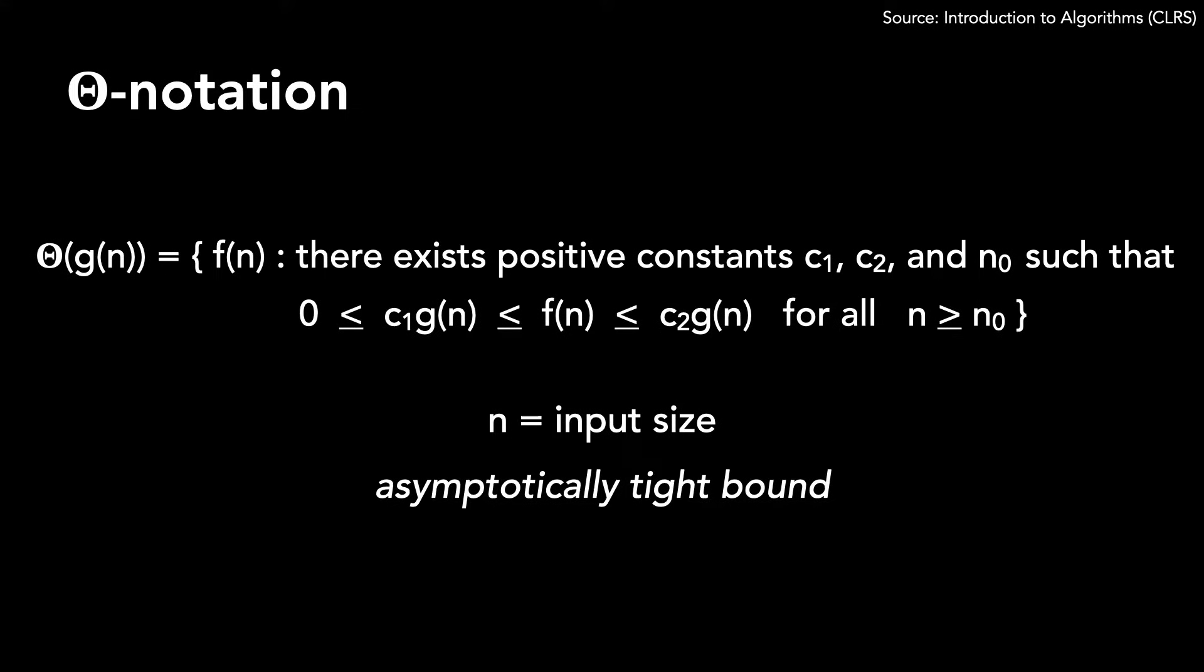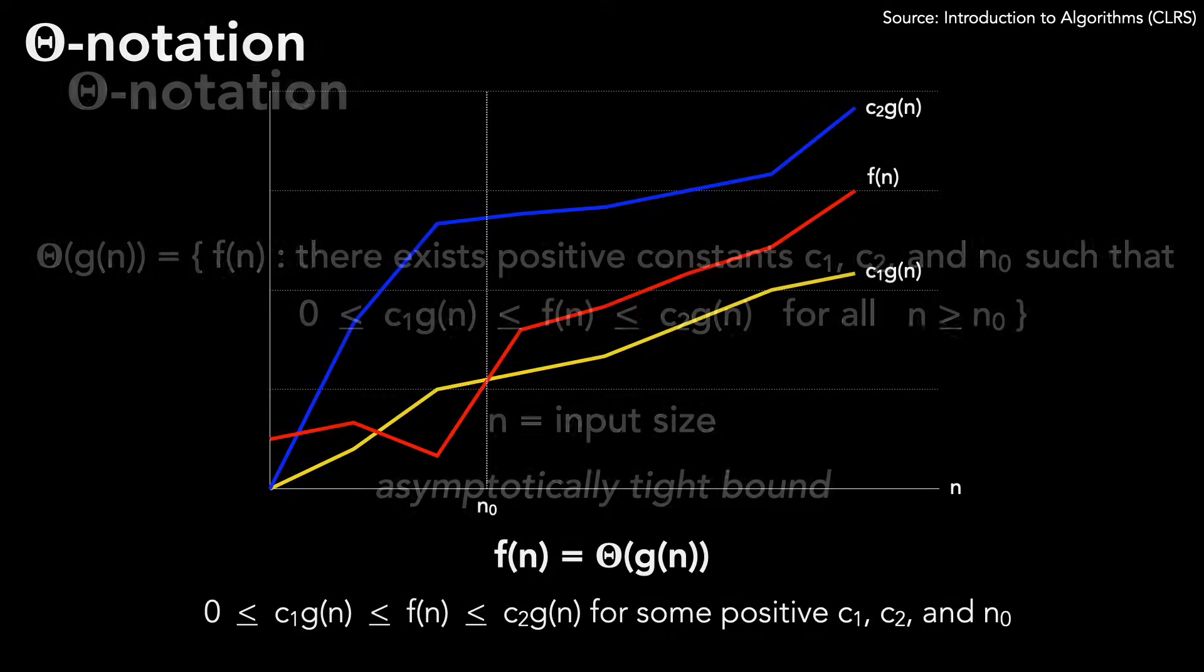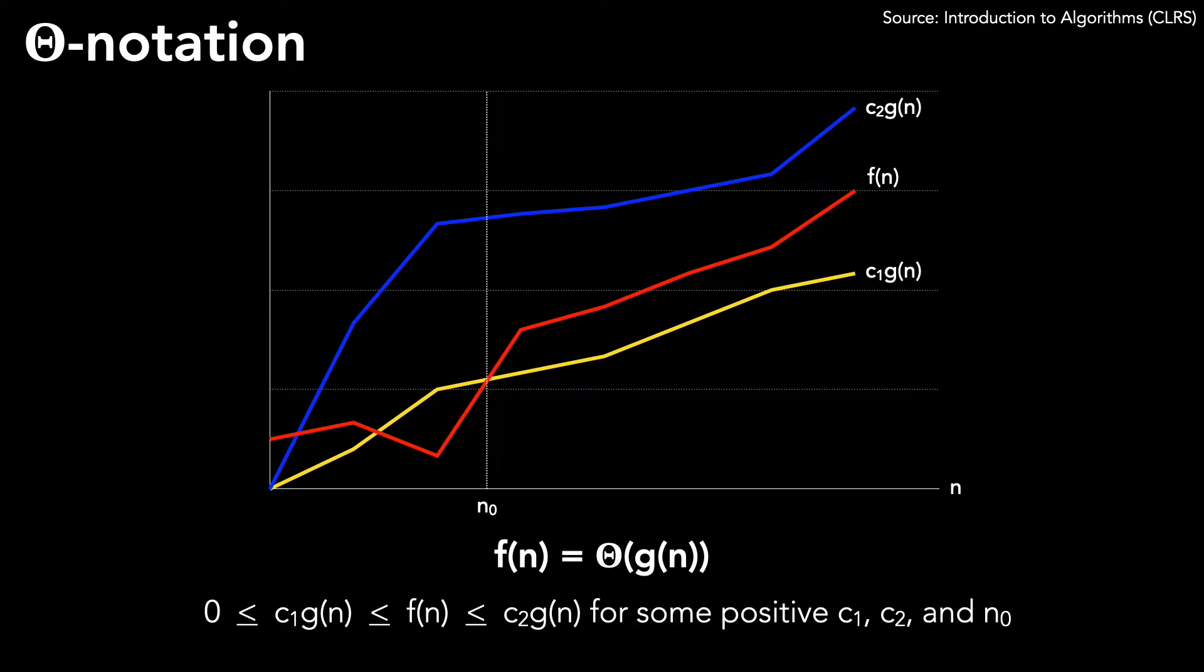That formula is a lot to take in. I think it's easier to see graphically. Note that for all n greater than n0, f(n) is sandwiched between c1·g(n) and c2·g(n). n0 is the minimum possible value, but we could also use a larger value. One final point is that f(n) must be non-negative for large values of n.